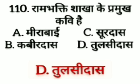Rambakti shakha ke pramukh kavi hai — option A: Mirabai, option B: Kabirdas, option C: Surdas, option D: Tulsidas. The answer is option D, Tulsidas.